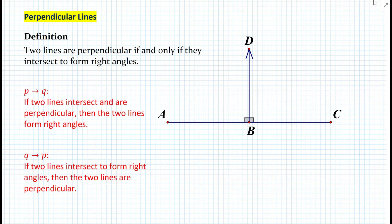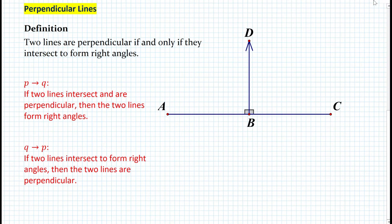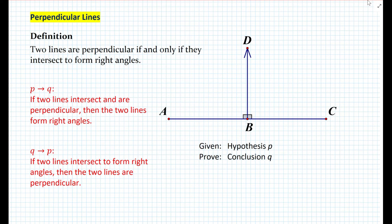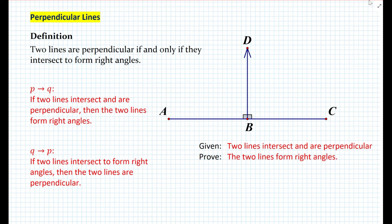In a statement-reason table, you can use either the conditional statement or its converse, or the definition itself. There is actually a connection between theorems and definitions. To prove the conditional statement — if P then Q — if two lines intersect and are perpendicular, then they form right angles: every time you have a conditional statement, think about what is given and what you are proving. You are given the hypothesis P as a true premise, and you want to prove the conclusion is true. In this case, the given is that two lines intersect and are perpendicular, and we want to prove they form right angles.